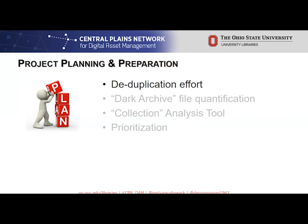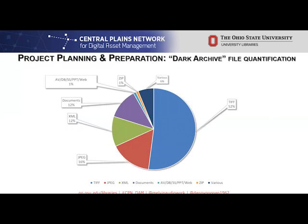2015 saw the implementation of our Fedora Sufia platform, whose pilot content was library collections content migrated from an external system that another campus entity no longer supported. In preparation for the migration of contents from the Dark Archive, we identified more than 85 file types and nearly 2 million objects that needed to be considered for migration. The good news was that 52% of those were TIFF images that should be a no-brainer for migration. The next largest quantities were JPEGs, documents — the bulk of which are PDFs — XML which may be metadata, various audiovisual files, databases, spreadsheets, PowerPoints, web files, and zip files whose internal contents would still need to be examined.